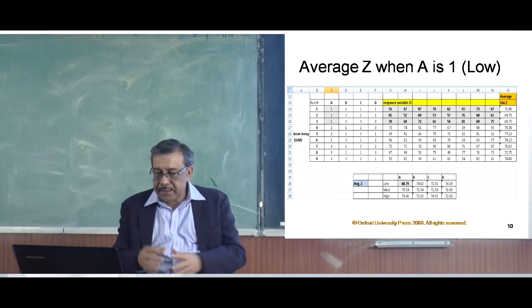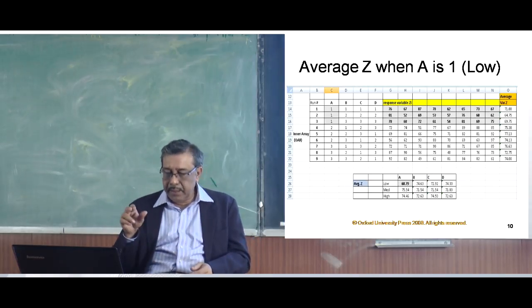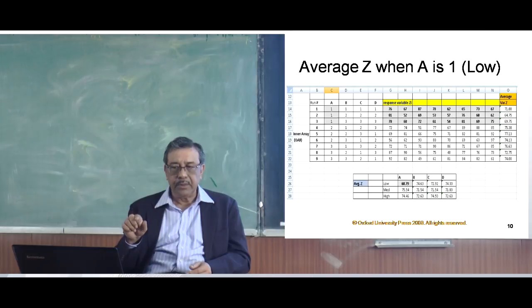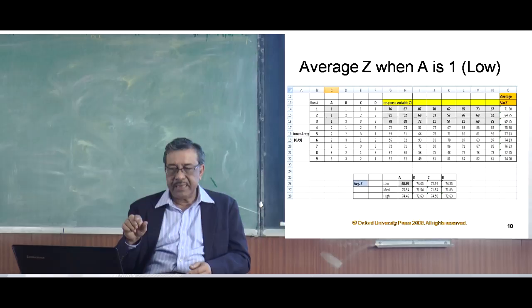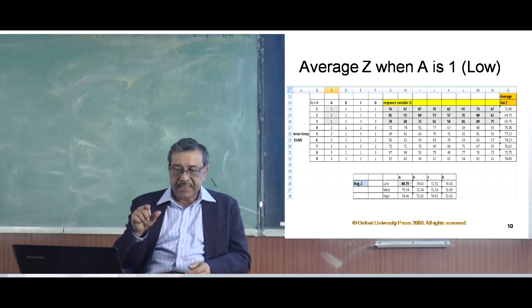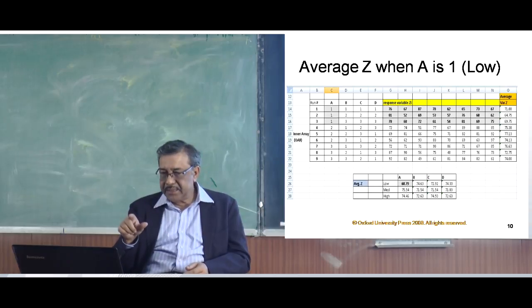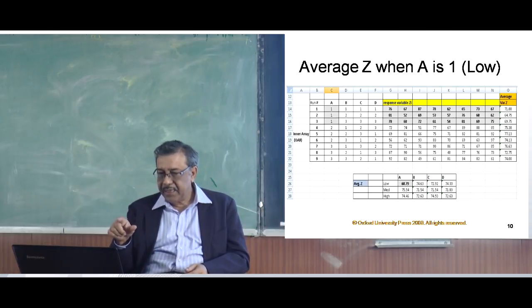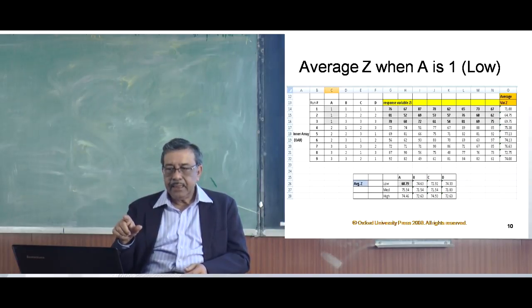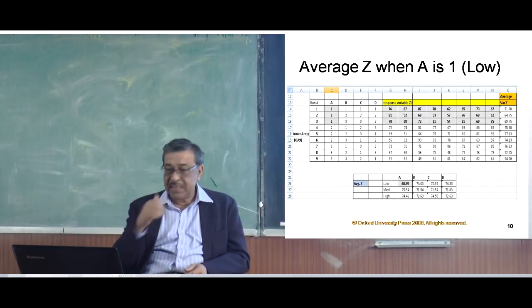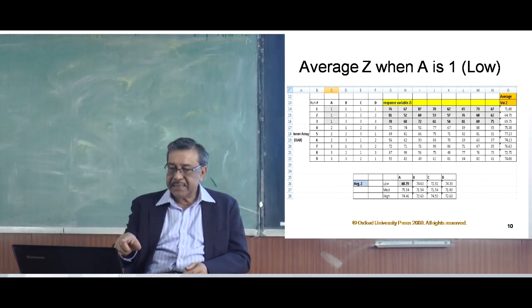Look at the number 68.79 — the cell for a=low, which is also shaded in gray. How do we find 68.79? You go to the upper table and consider the output where a is 1, which is shaded there. All the numbers from cell G14 to N16 — those shaded numbers, if you average out, give the value 68.79.